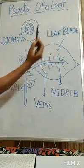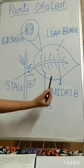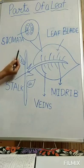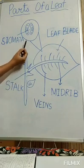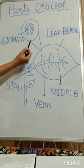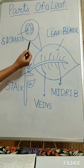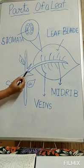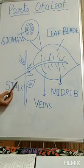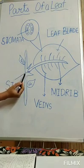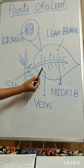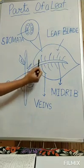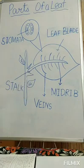The five components are: stomata, leaf blade, stalk, veins, and midrib. Stomata absorbs carbon dioxide and releases oxygen into the atmosphere. The stalk acts like a neck of the leaf — whatever food is prepared in the leaf travels through the stalk to the rest of the parts of the plant.